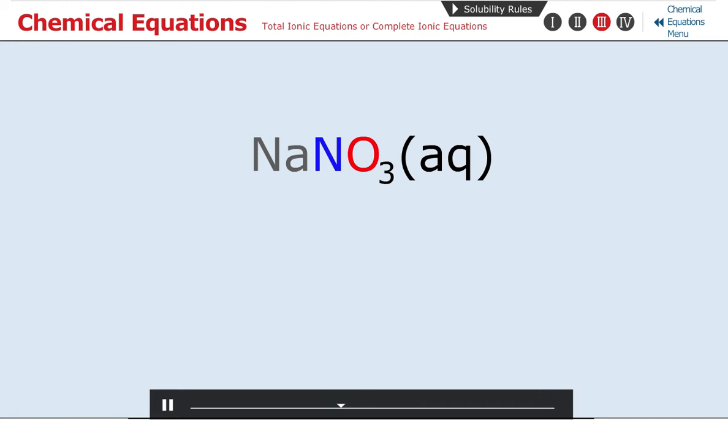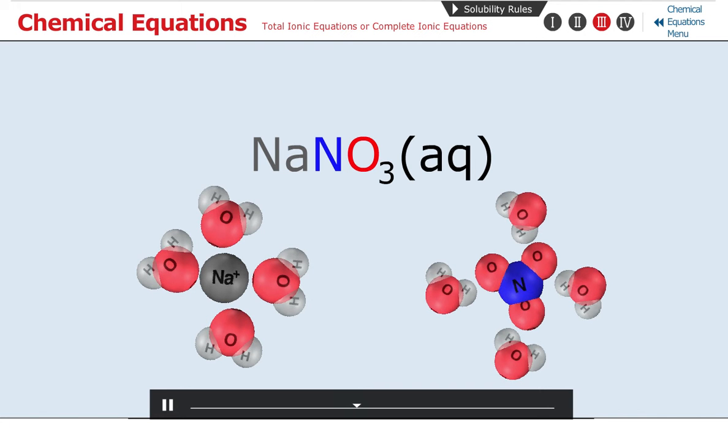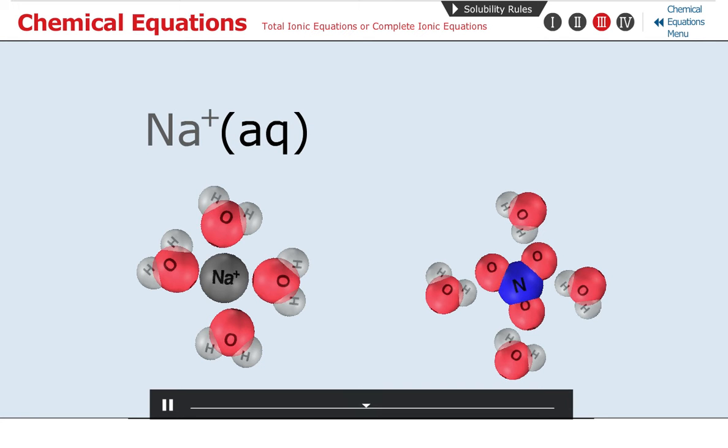Sodium nitrate is aqueous, meaning hydrated sodium ions are separated from hydrated nitrate ions by water molecules in the solution. This is written as Na positive Aq plus NO3 negative Aq.